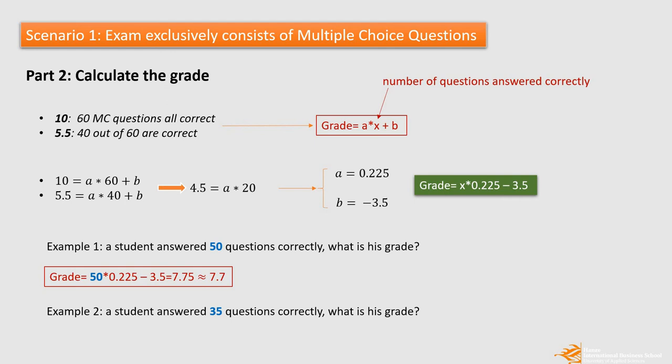Look at another example. A student answered 35 questions correctly, what is his grade? Again, we are going to use this equation. 35, that is the X, multiplied by A, 0.225 and minus 3.5. The grade is 4.375. We round it down to 4.3. So for a student who answered 35 questions correctly, his grade is 4.3.